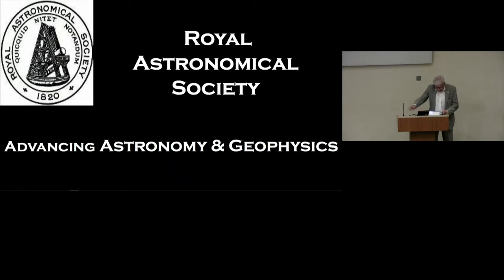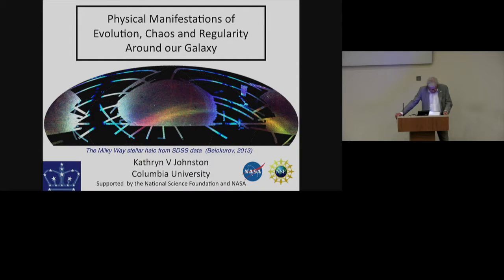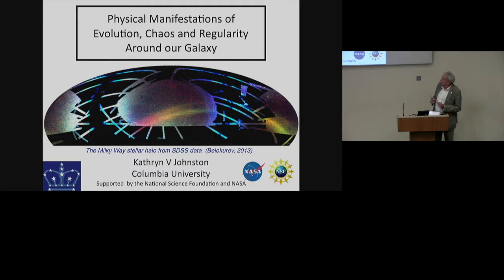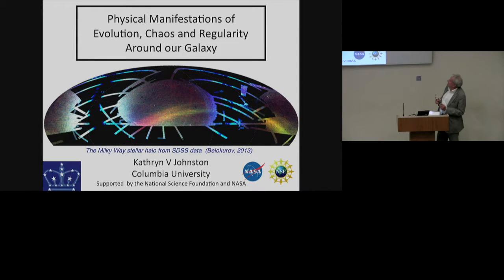It's now my pleasure to introduce the 2017 Eddington Lecture. It will be given by Catherine Johnston from Columbia University and the title is Physical Manifestations of Evolution, Chaos and Regularity Around Our Galaxy.